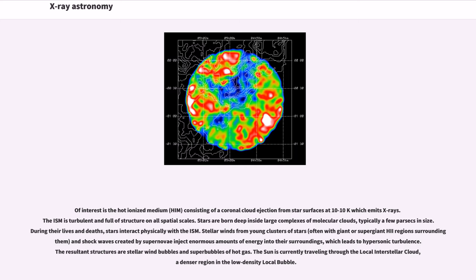Of interest is the hot ionized medium consisting of a coronal cloud ejection from star surfaces at 10^6 K which emits X-rays. The ISM is turbulent and full of structure on all spatial scales. Stellar winds from young clusters of stars and shock waves created by supernovae inject enormous amounts of energy into their surroundings, which leads to hypersonic turbulence. The resultant structures are stellar wind bubbles and superbubbles of hot gas. The sun is currently traveling through the local interstellar cloud, a denser region in the low-density local bubble.